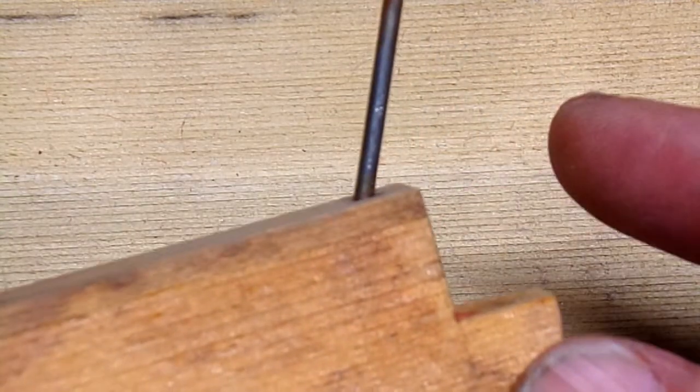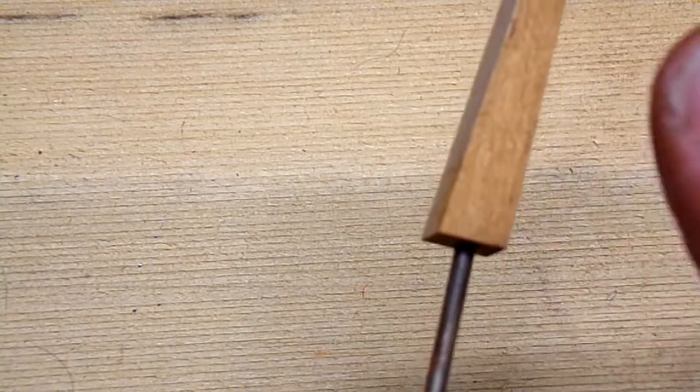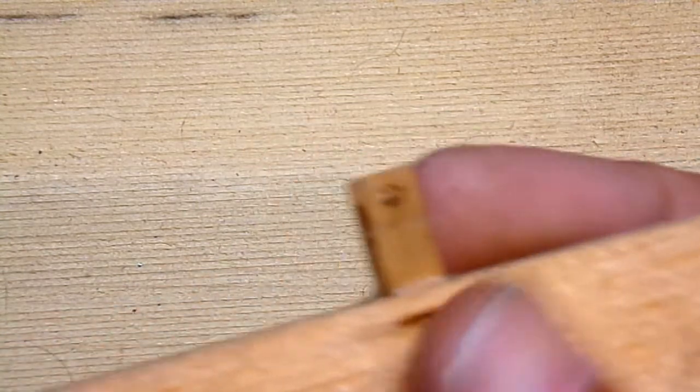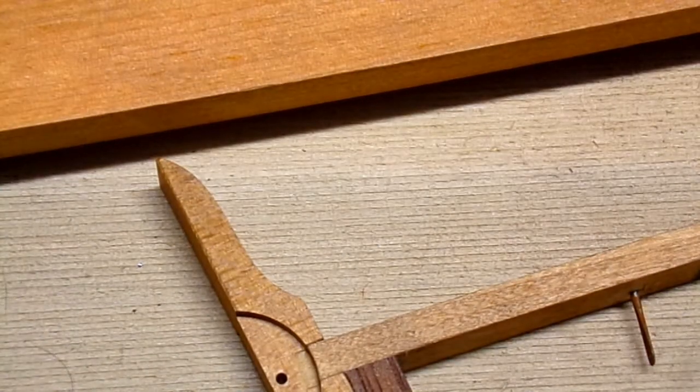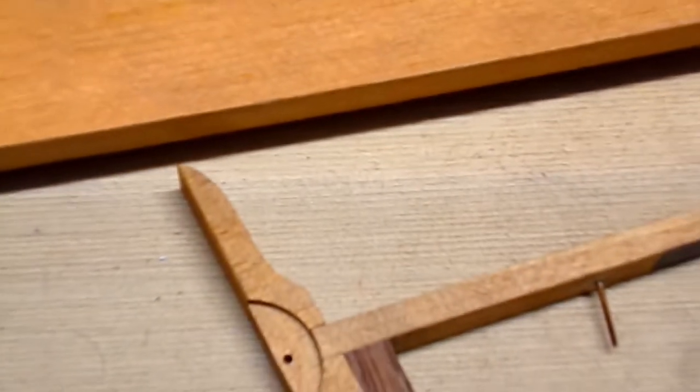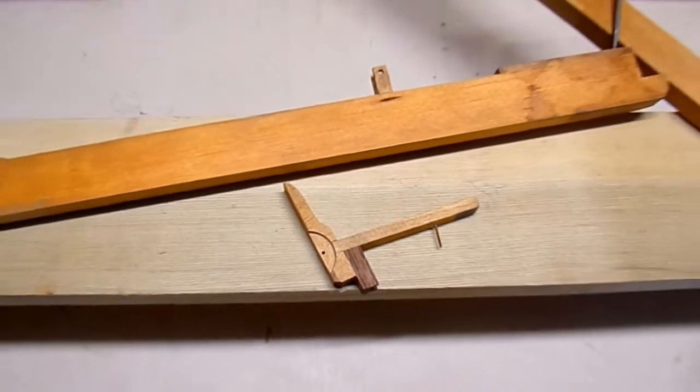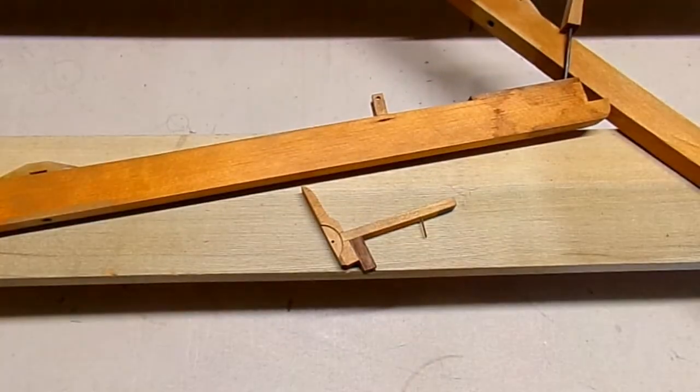But those are the jobs for the keys. Let's see. Damper lifts, back checks, saddles, balance rail and front rail. One, two, three, four, five, six, seven different refelting operations in the keys. And I'll show you where we get started on that.